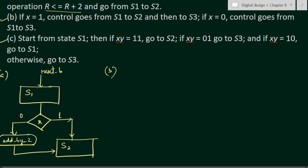In the second chart, the conditions are: if x equals one, control goes from state S1 to S2 and then to S3; if x equals zero, control goes directly from S1 to S3.